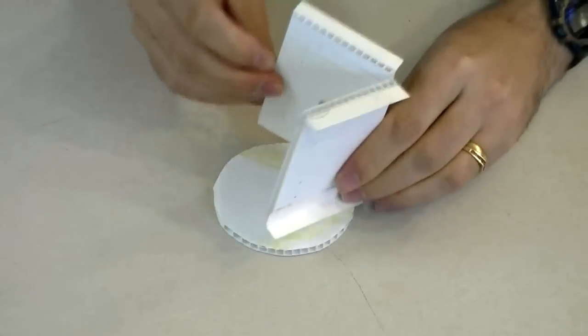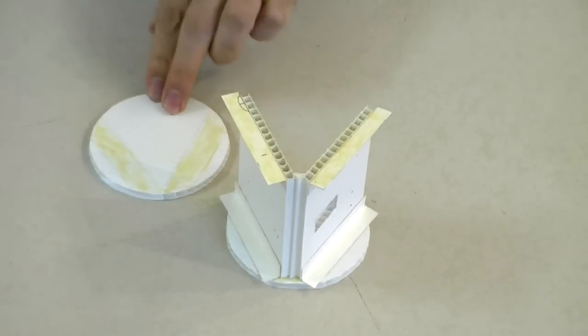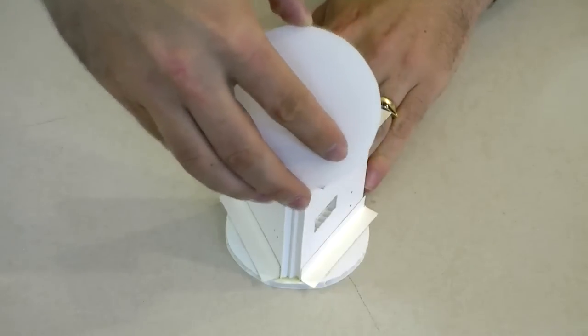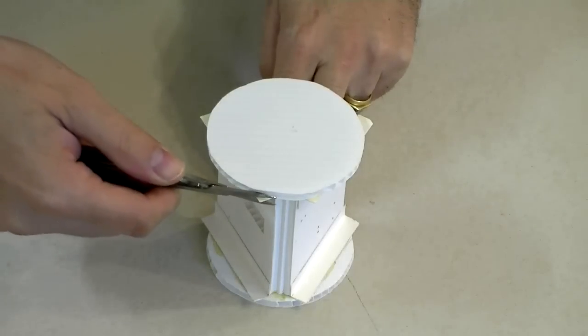Glue the V to one of the circles and glue the other circle on top. Trim it.